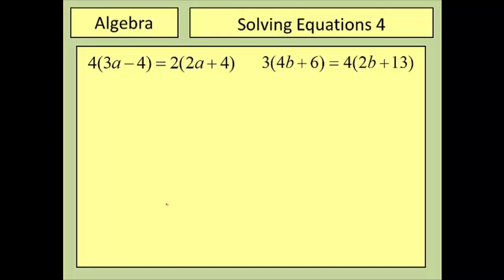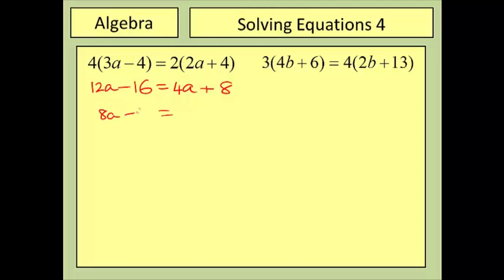Here are two more questions — be careful, I've introduced some brackets, so these are quite tough. Pause the video and hit play when you're ready. For the first one: expand to get 12a minus 16 equals 4a plus 8. Subtract 4a from both sides giving 8a minus 16 equals 8, then add 16 to both sides giving 8a equals 24, then divide by 8 — a equals 3.